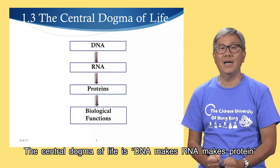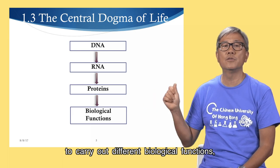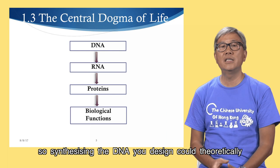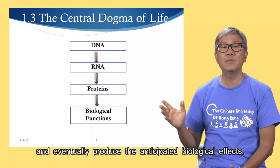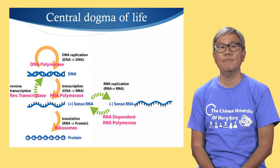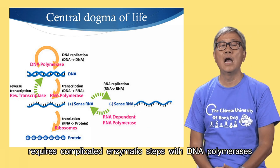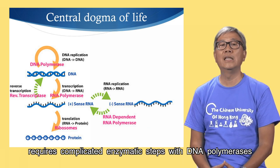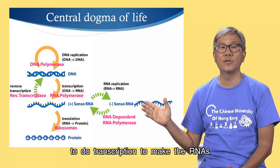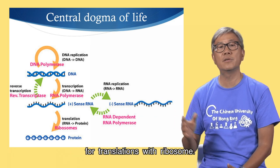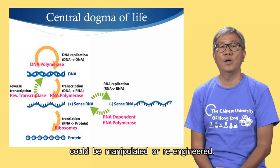The central dogma of life is DNA to RNA to protein, to carry out different biological functions. Synthesizing DNA you design could theoretically and eventually produce the anticipated biological effects. However, the processing of these biomolecules requires complicated enzymatic steps — DNA polymerases to duplicate DNA, RNA polymerase to do transcription to make RNAs for translation with ribosomes — and these processes could be manipulated or re-engineered.